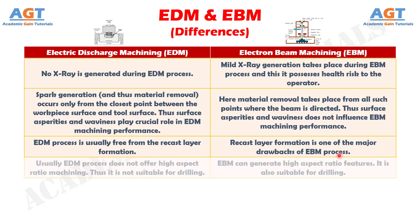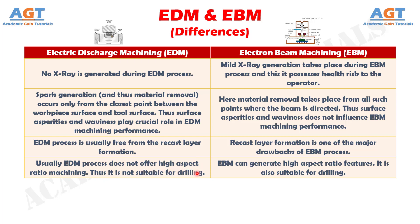Difference Number 9: Usually Electric Discharge Machining process does not offer high aspect ratio machining, and thus it is not suitable for drilling, whereas Electron Beam Machining can generate high aspect ratio features and is also suitable for drilling.